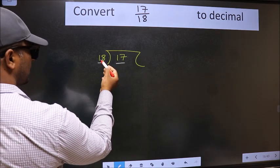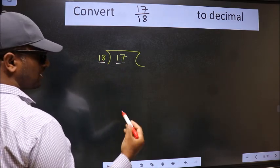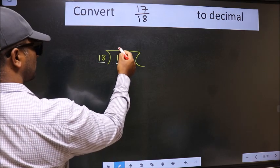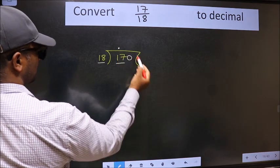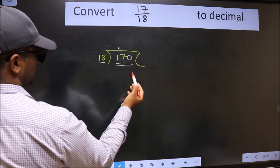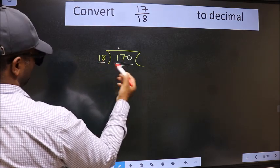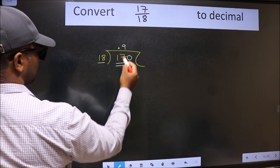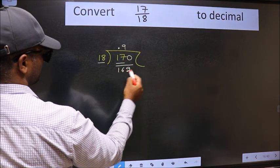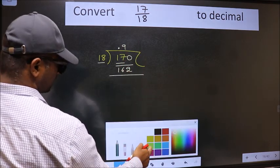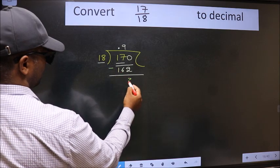17 is smaller than 18. So what we should do is put dot and take 0. So 170. A number close to 170 in 18 table is 18 times 9 is 162. Now we should subtract. We get 8.